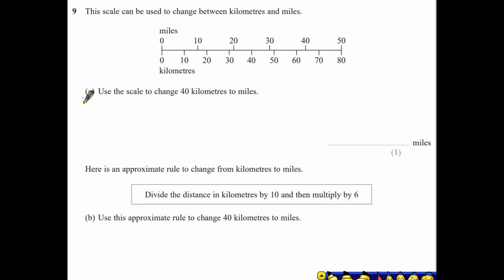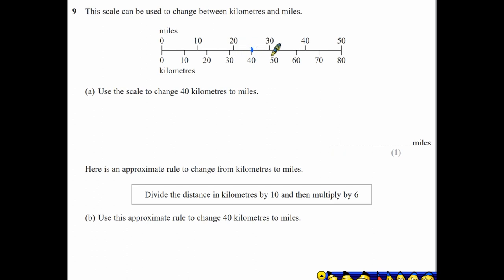Question 9A: using a scale at the top showing miles and kilometres, use the scale to change 40 kilometres to miles. Kilometres are along the bottom. At 40 kilometres, the corresponding point looks to be exactly midway between 20 and 30 miles, therefore it's 25 miles.